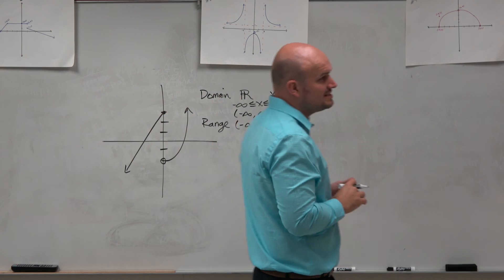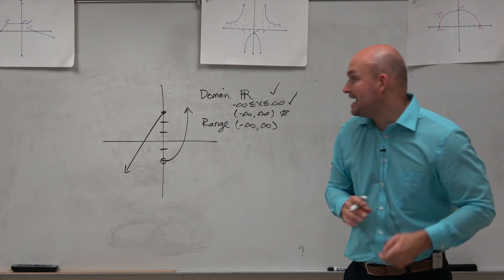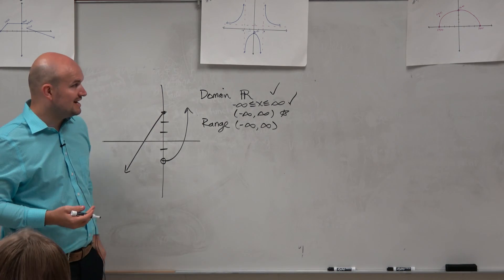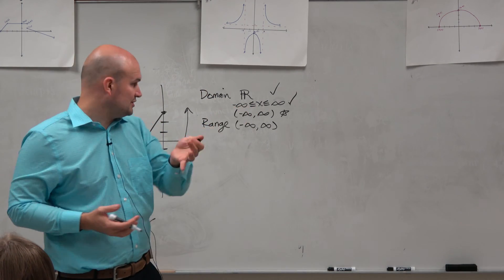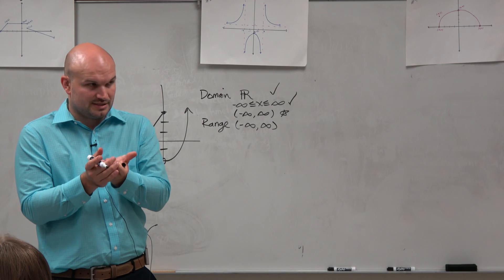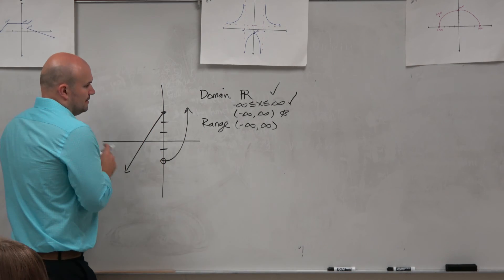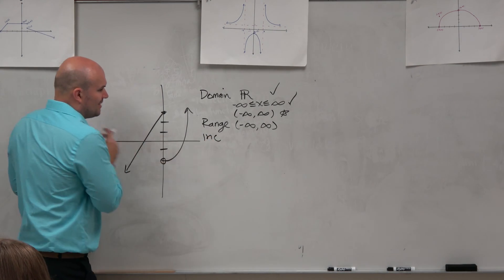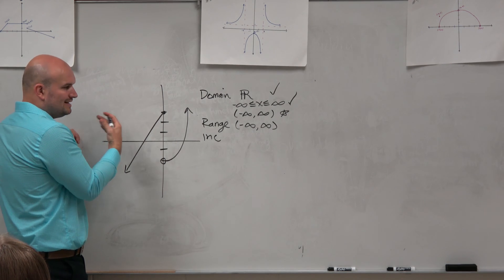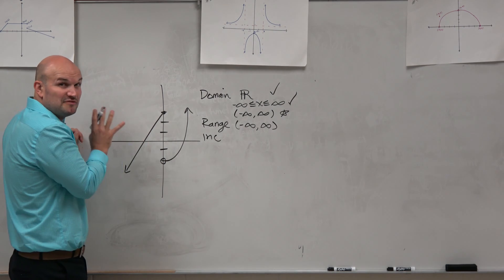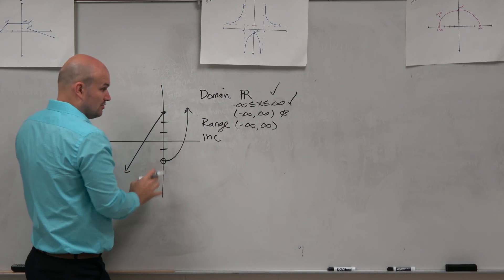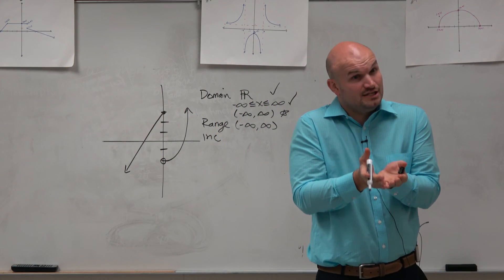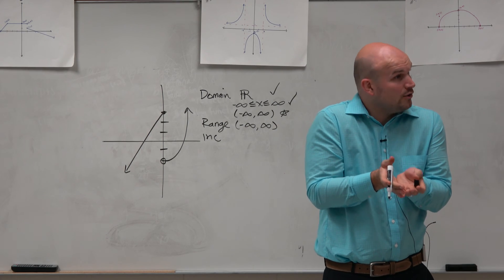The next thing is going to be increasing, decreasing, and constant. When we're looking at increasing, decreasing, constant, this is what kind of got to other students. We're reading the graph from left to right — just like a book. Basically, we're saying: is the graph going up, is it going down, or is it remaining the same?